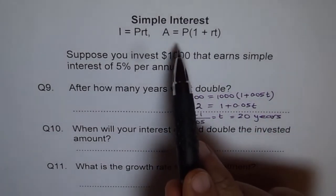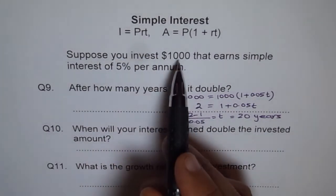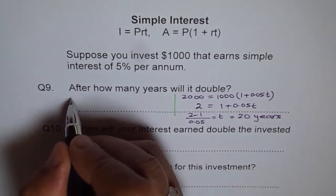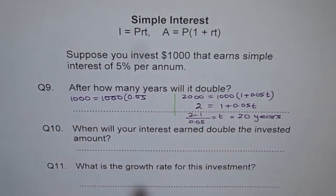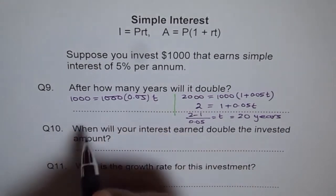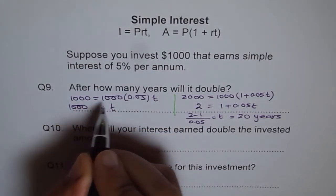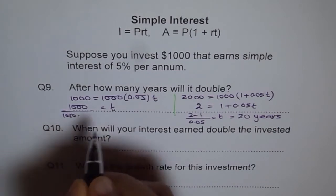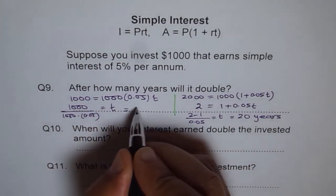This is one way using the formula directly. The second way is looking at how much time it takes to earn interest equal to the principal. The principal invested is one thousand. If we earn one thousand more, the amount doubles. So let I equal one thousand, P equals one thousand, rate of interest is 0.05, and time is T. From here we calculate: T equals one thousand divided by one thousand times 0.05, which gives one divided by 0.05.